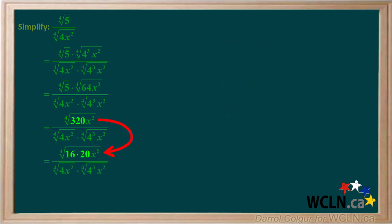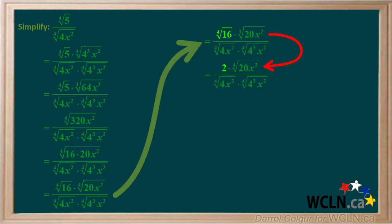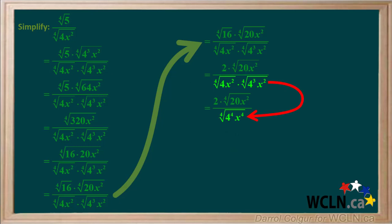We can factor 320 as 16 times 20, so we split the fourth root of 16 times 20x squared into the fourth root of 16 times the fourth root of 20x squared. The fourth root of 16 is 2. Looking at the denominator, we can multiply the fourth root of 4x squared by the fourth root of 4 cubed x squared to give us the fourth root of 4 to the fourth x to the fourth, which equals 4x.